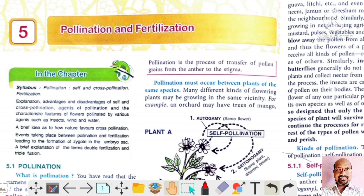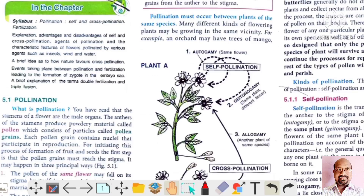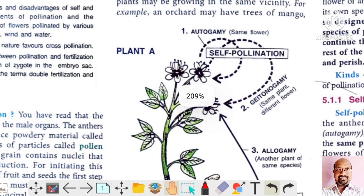There are two kinds of pollination: self-pollination and cross-pollination. Self-pollination is again divided into two types: autogamy and geitonogamy. Autogamy is the transfer of pollen grains from anther to stigma of the same flower of the same plant, and geitonogamy is the process of transfer of pollen grains from anther to stigma of another flower of the same plant.